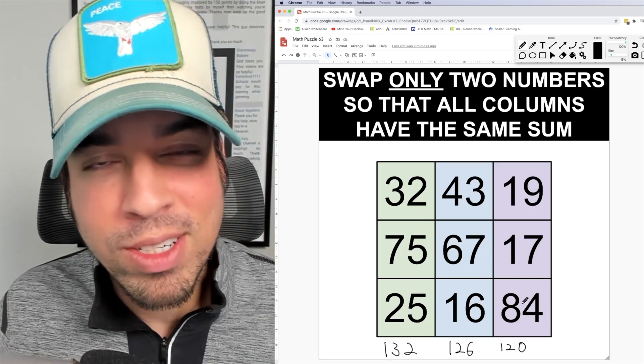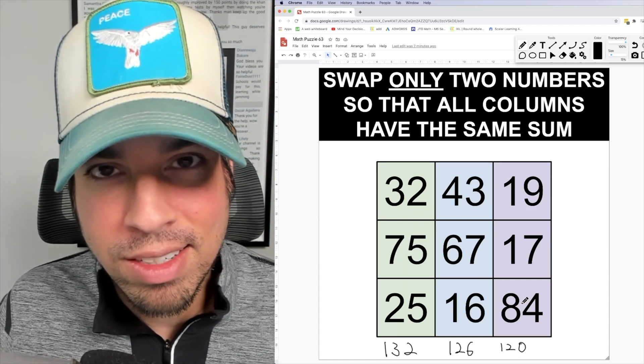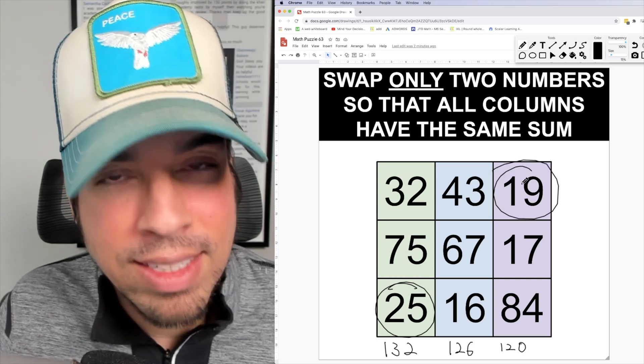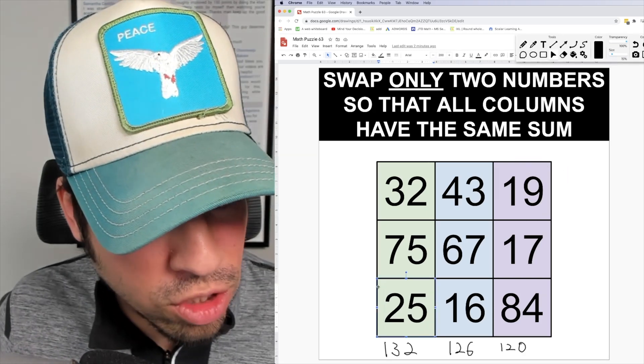So we're going to swap two numbers that have a difference of six. The only two numbers that fit that bill are 25 and 19. So I'm going to go ahead and switch out these numbers like so.